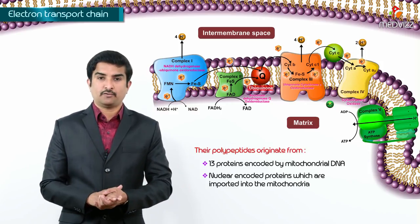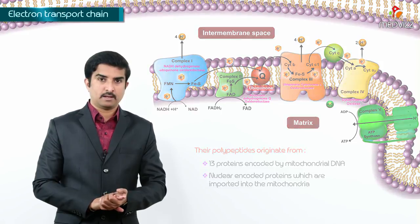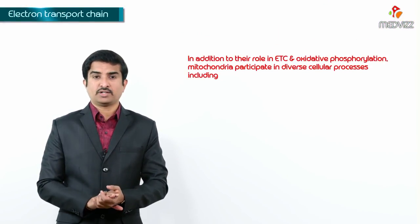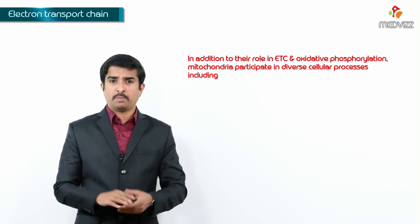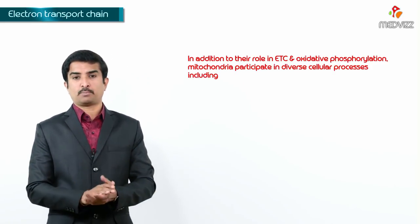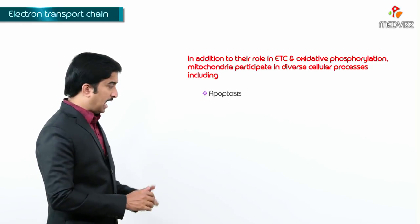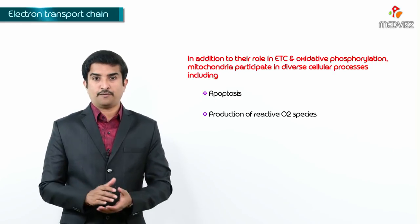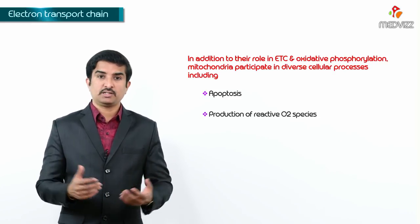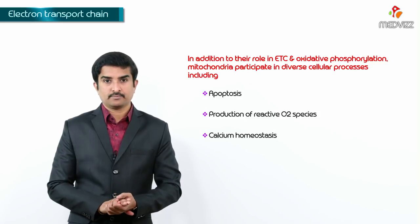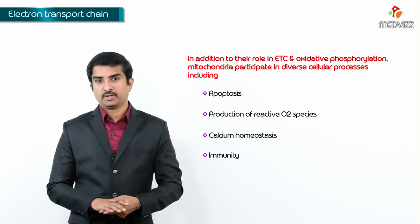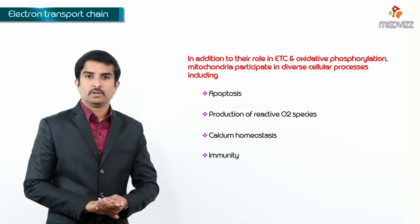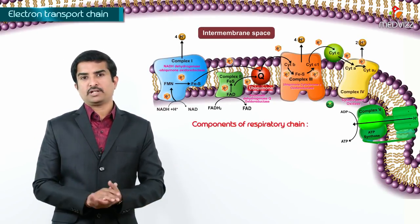Mitochondria play an important role in oxidative phosphorylation as well as in the electron transport chain. In addition to their role in ETC and oxidative phosphorylation, mitochondria also participate in diverse cellular processes including apoptosis (programmed cell death), production of reactive oxygen species, calcium homeostasis, and immunity.